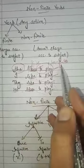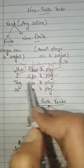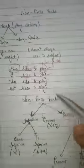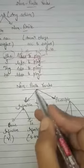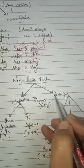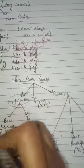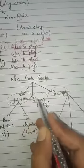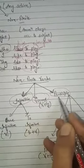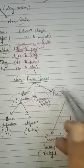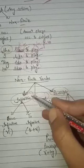Now you must have understood the difference: a finite verb changes according to singular or plural subject, while a non-finite verb doesn't change. Non-finite verbs have three types: first is infinitive, second is gerund, and third is participle. I'll explain the different forms of these three, then we'll talk about the rules — where to use each one.